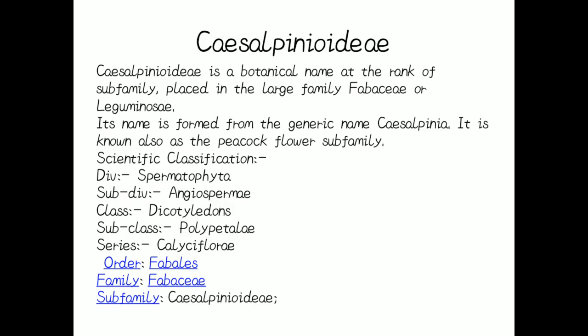Caesalpinioideae or Caesalpiniaceae is a botanical name at the rank of the sub-family. It is placed in the large family of Fabaceae or Leguminaceae. Its name is formed from the generic name Caesalpinia. It is also known as the peacock flower sub-family. Now let's see the scientific classification.